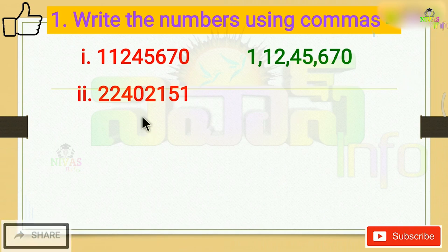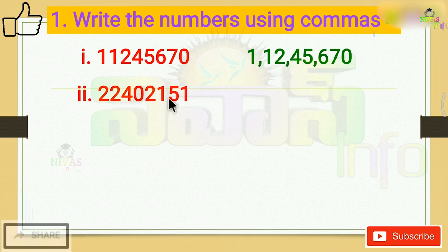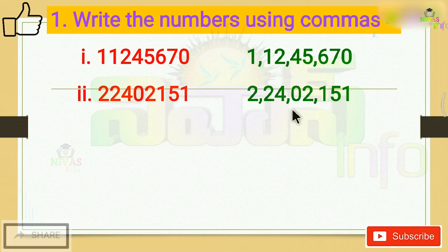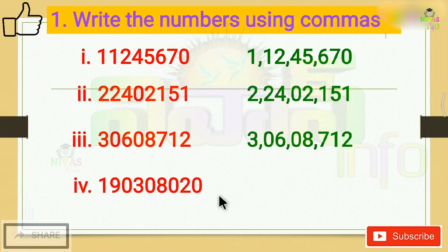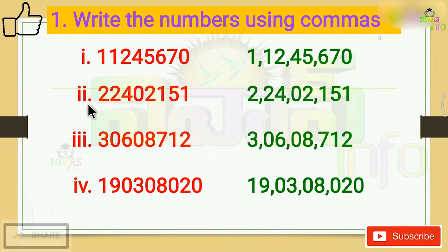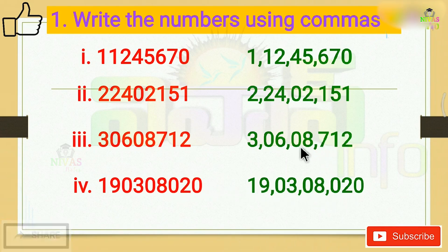The second problem is similar. If we have the digits and need to place commas, we take the first 3 digits, then 2 digits, then 2 digits, then 2 digits, placing a comma between each group.